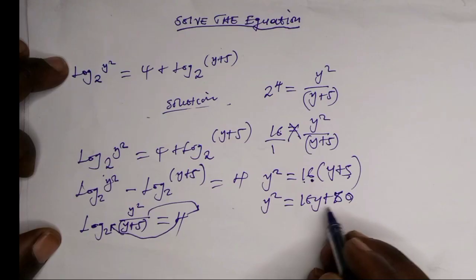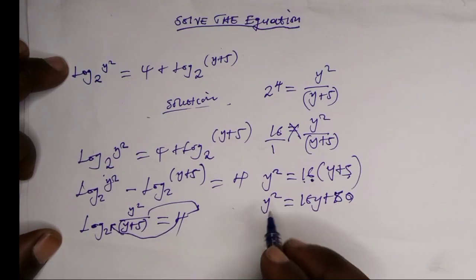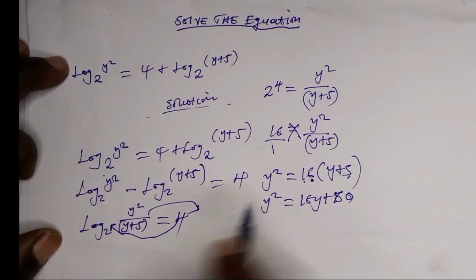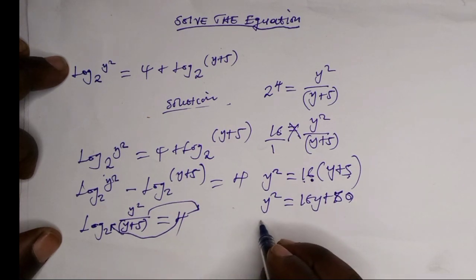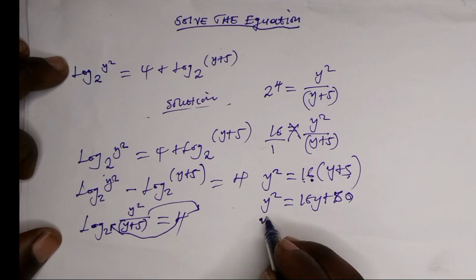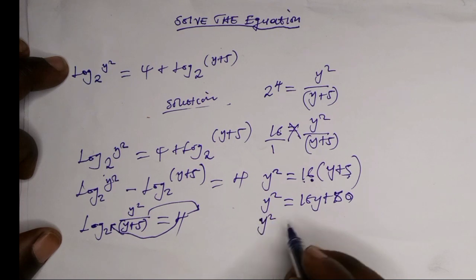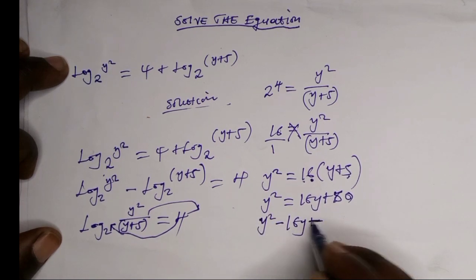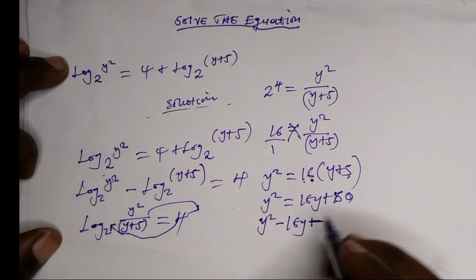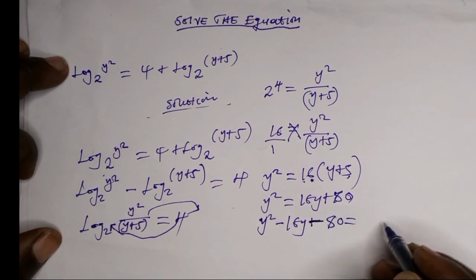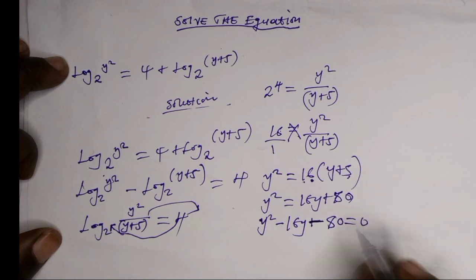So here we have a quadratic equation. Let's try to simplify now. It will be y squared minus 16y, because 80 will cross the equal sign to become minus 80, which is equals to 0.